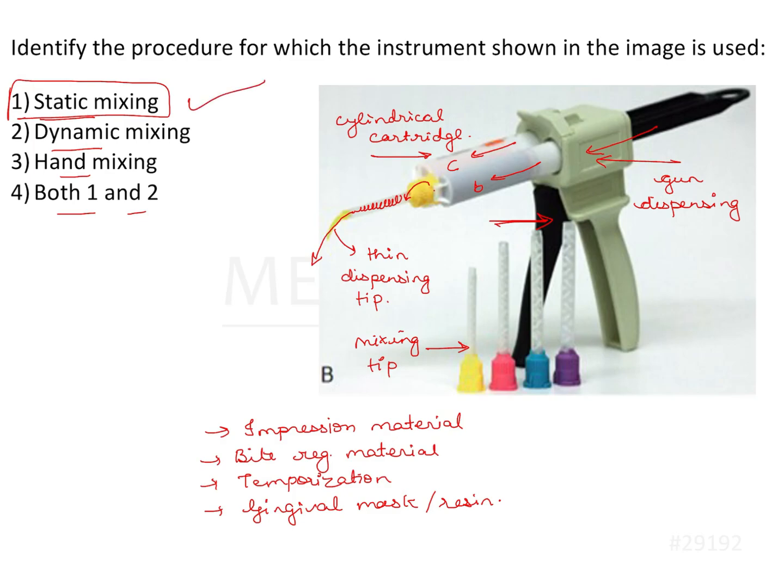The advantages of static mixing over hand mixing are numerous. The voids are lesser, the air entrapment is reduced, the mix is smoother and the consistency is easily flowable. The handling properties are improved and you can extrude the material only in the limited area.